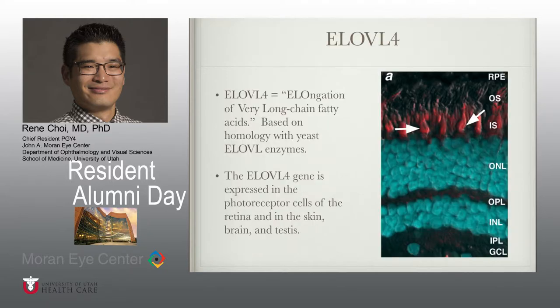So what exactly is ELOVL4 responsible for? It codes for a protein involved in the elongation of fatty acids — thus it stands for elongation of very long-chain fatty acids. The ELOVL4 gene has been shown to be expressed abundantly in photoreceptor cells of the retina and to a lesser extent in the brain, testes, and skin.